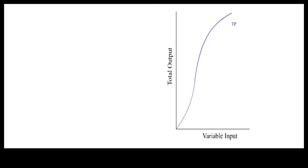From this TP curve we can derive the total variable cost curve. In the TP curve, output is a function of variable input. By reversing the horizontal and vertical axis, we get total variable input. This new flipped curve shows variable input as a function of output.